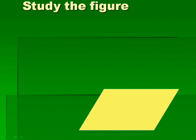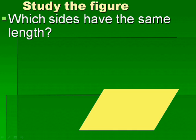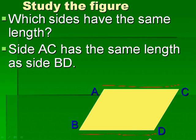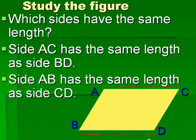Study the figure. Which sides have the same length? Side AC has the same length as Side BD. Side AB has the same length as Side CD.